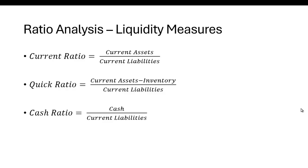Current liabilities are things you expect to pay within the year — wages payable, taxes payable, etc. So if you take the ratio of current assets to current liabilities, you get a gauge that you can compare to a leading competitor or to the industry average. A big company will have a lot more current assets than a small company, but also a lot more current liabilities, so the ratio gives us a sense of where they stand.